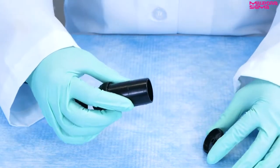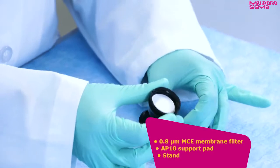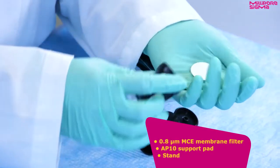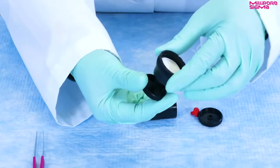The unit includes a center extension cowl. The bottom piece contains a 0.8 micron MCE membrane filter and an AP10 support pad. It also has a stand at the bottom.